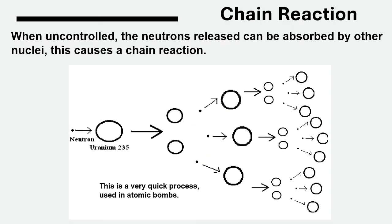When uncontrolled, the neutrons released in the nuclear fission process can be absorbed by neighbouring uranium nuclei, causing them to undergo nuclear fission and release more neutrons. This is a very quick process and it releases a massive amount of energy in a short space of time. This is the type of reaction that, when left uncontrolled, is used in an atomic bomb.